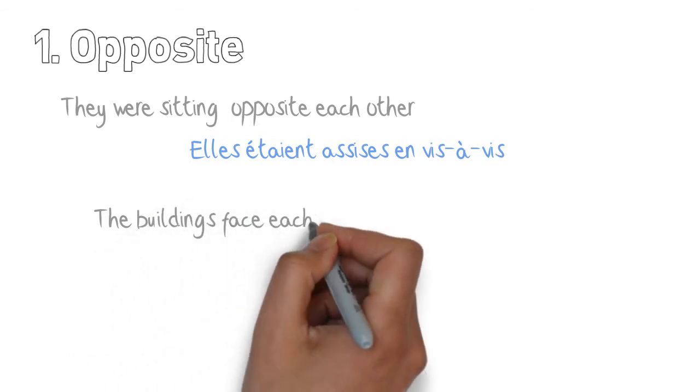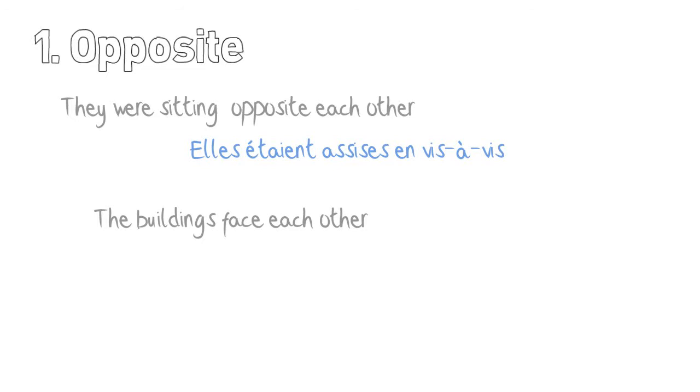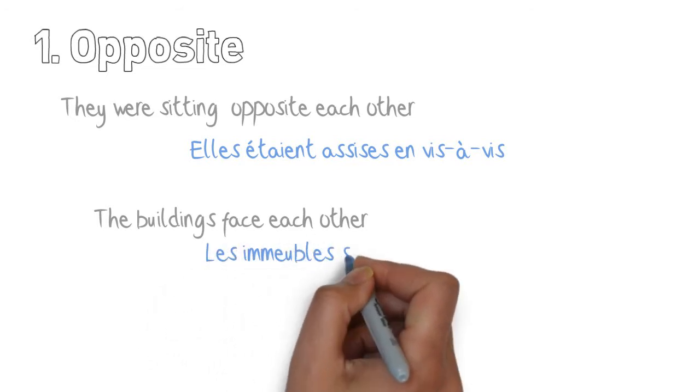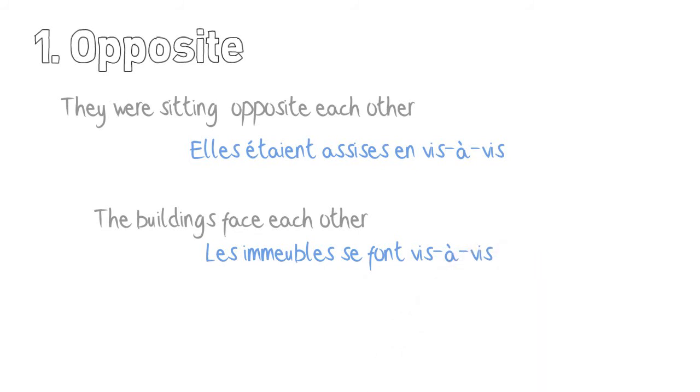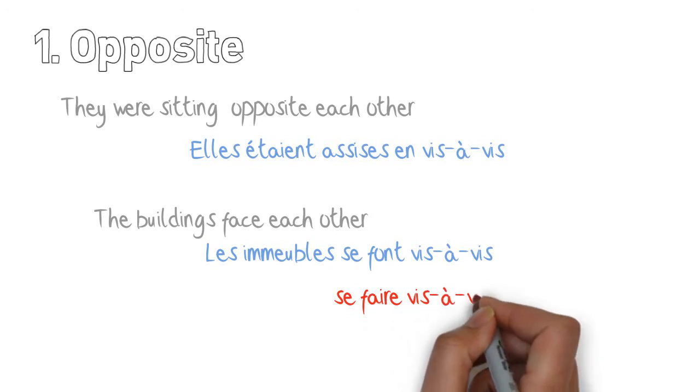Another way to use vis-à-vis: the buildings face each other. Les immeubles se font vis-à-vis or les immeubles se font face. And here the expression is se faire vis-à-vis. Sont en vis-à-vis is also possible. But se faire vis-à-vis, it's an expression.